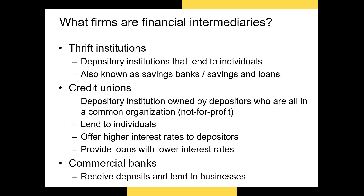Credit unions are similar to thrifts and commercial banks in that they receive deposits and lend to individuals. An additional benefit of credit unions is that because they're not-for-profit organizations, they often pay higher interest rates to depositors and charge lower interest rates on the loans they make. Commercial banks — most of the large banks in the U.S. — receive deposits from individuals and lend those funds out to both individuals and firms. All three of these organizations also invest in bonds and stocks, which allows them to earn higher returns and diversify their portfolios, decreasing the likelihood they will default on obligations to depositors, shareholders, or bondholders.